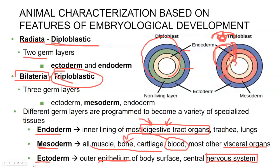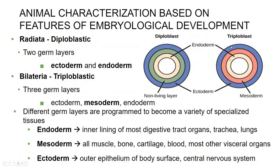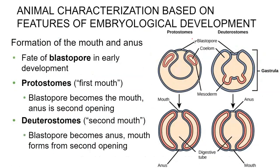Here we can see a different diagram of diploblast versus triploblast, where we have the endoderm and ectoderm, but there is a non-living or hollow layer in the diploblastic animals. Mesoderm fills this hollow space in the triploblastic. Now, what about that blastopore? We said that sometimes it's a mouth and sometimes it's an anus — it just depends on what type of animal we're talking about.